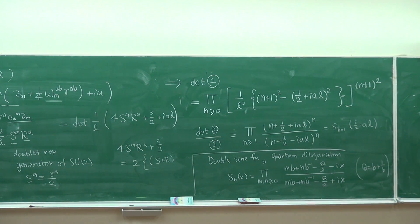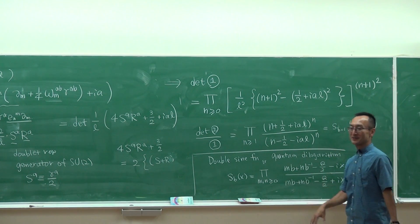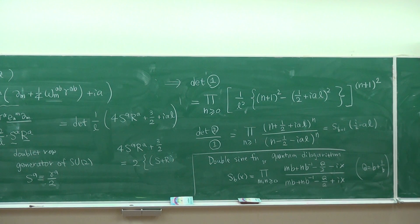As a function of a, it can simply be written in terms of this function. The definition of this double-sine function involves some zeta function regularization, but this is our result.